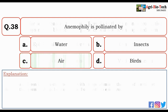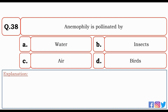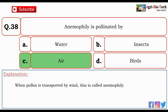Next question: anemophily is pollination by — water, insects, air, or birds? The correct option is C — air. When pollen is transported by wind, this is called anemophily.